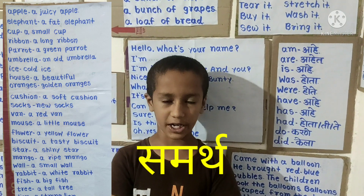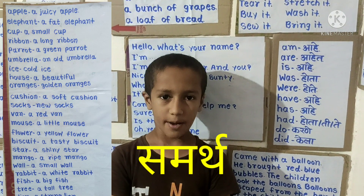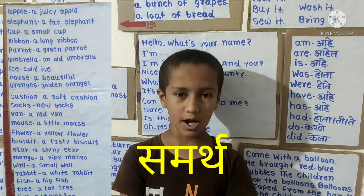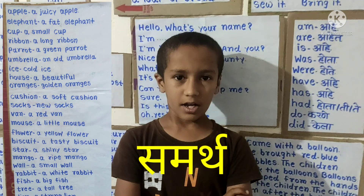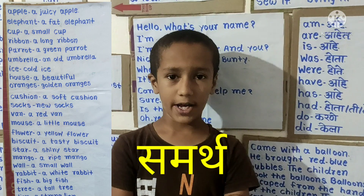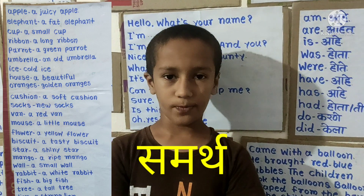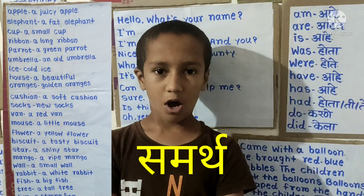Parrot, a green parrot. Umbrella, an old umbrella. Ice, cold ice. House, a beautiful house.